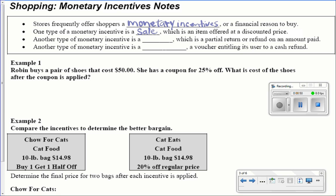Another type of monetary incentive is a rebate, which is a partial return or refund on an amount paid. Another type of monetary incentive is a coupon, a voucher entitling the user to a cash refund.